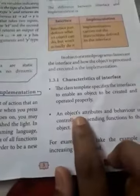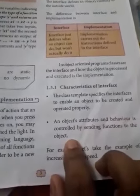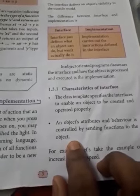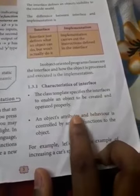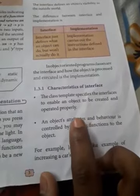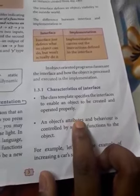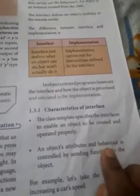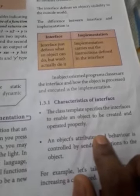An object's attributes and behavior is controlled by sending functions to the object. Attributes and behavior — what do I mean by that? Attributes are what we call data members, properties, and states. Behavior we can call tasks and member functions. Attributes are the physical parts of the object.